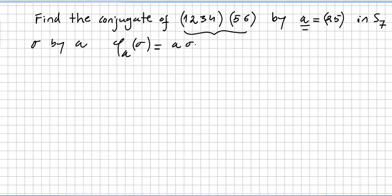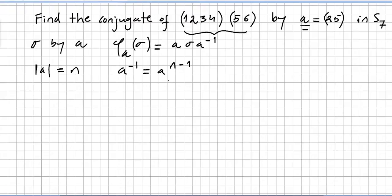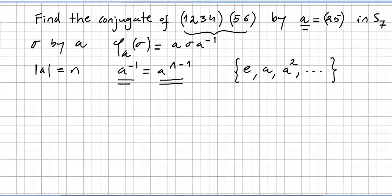So the conjugate of sigma by a equals a sigma a inverse. Another remark: if the order of an element in a group is n, then the inverse of a will be a to the power of n minus 1. You can verify this by listing the identity, a, a squared, etc., and seeing that the inverse of a is a^(n-1).